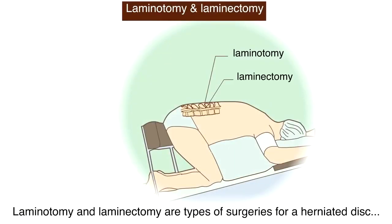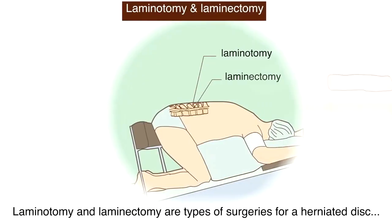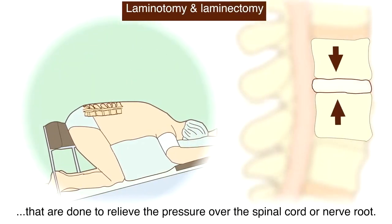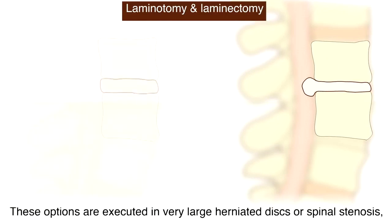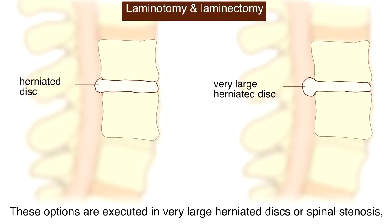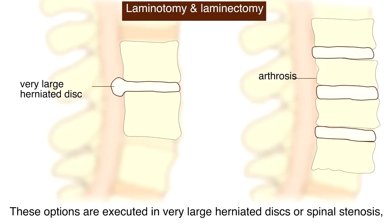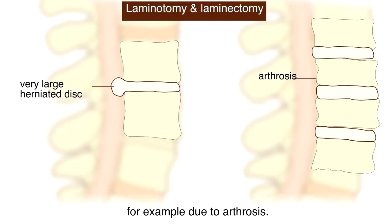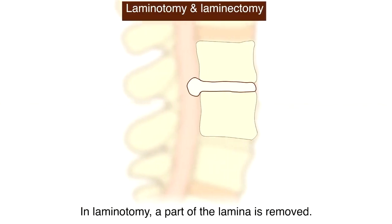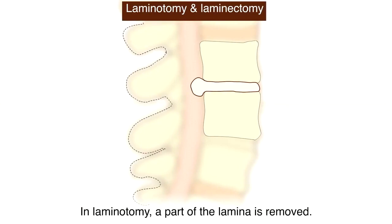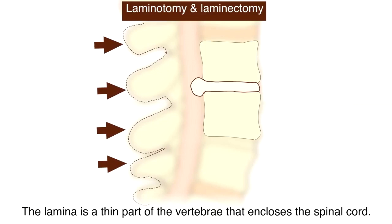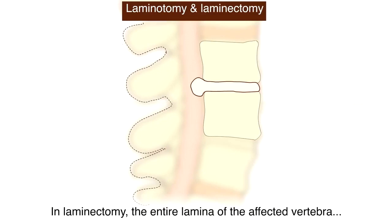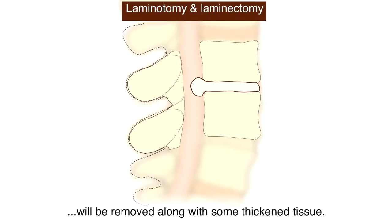Laminotomy and laminectomy are types of surgery for herniated disc done to relieve pressure over the spinal cord or nerve root. These options are used in very large herniated discs or spinal stenosis, for example due to arthrosis. In laminotomy, a part of the lamina is removed — the lamina is a thin part of the vertebra that encloses the spinal cord. In laminectomy, the entire lamina of the affected vertebra is removed along with some thickened tissue.